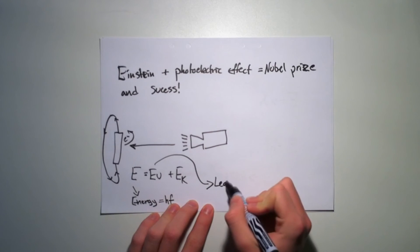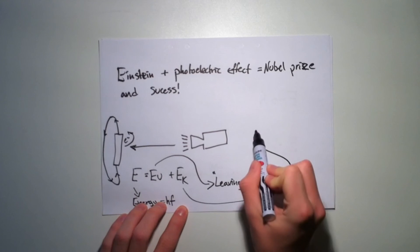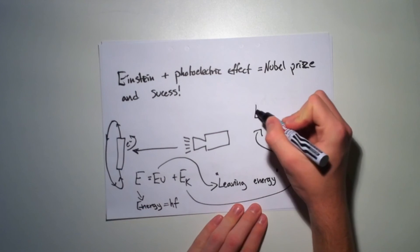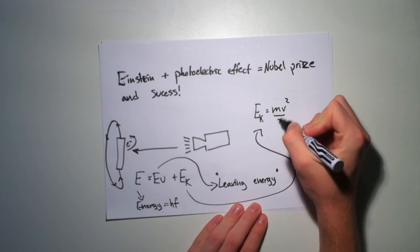The EU stands for the energy it takes for one electron to leave the steel, and EK is the kinetic energy which remains after one has been excited, which can be described as M times V squared divided by 2.